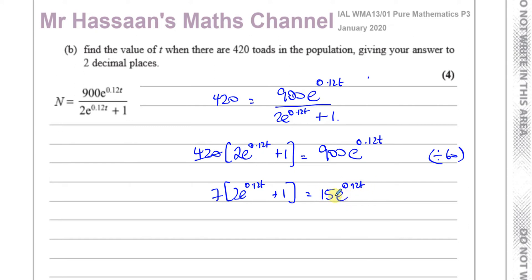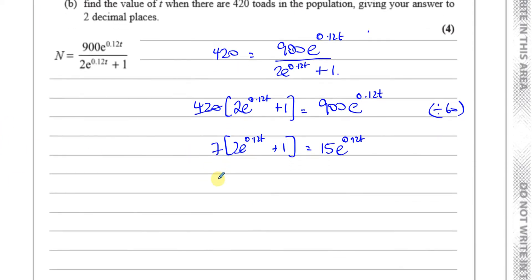Now what I want to do is bring the t terms on one side. So I'm going to expand this side. I have 7 times 2, which is 14. So I have 14 e to the power of 0.12t plus 7 equals 15 e to the power of 0.12t. Now I can bring the e terms to one side. So I've got 15 e to the power of 0.12t minus 14 e to the same power, which gives me 1. So that's e to the power of 0.12t equals 7.